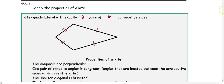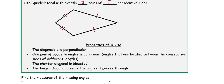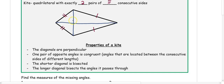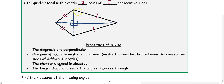The other properties of a kite are that the diagonals are perpendicular. The diagonals go from opposite vertices and they are perpendicular, which means that they form right angles. One pair of opposite angles is congruent — the opposite angles that are congruent are always going to be the angles that are between the two different sizes of our sides.